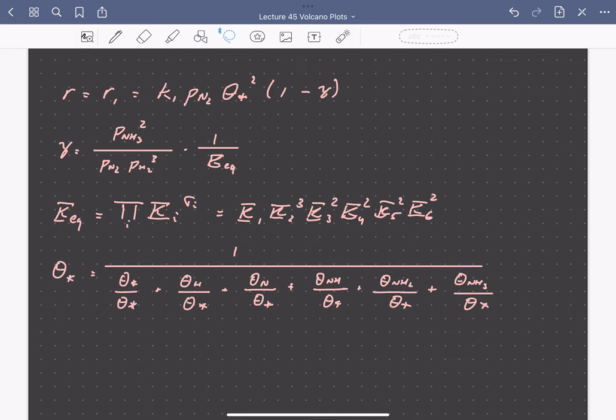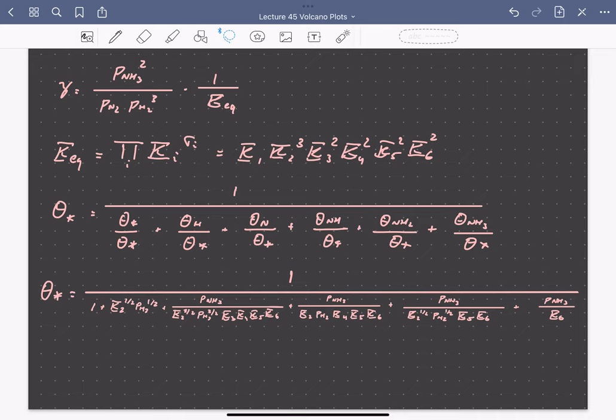The vacant site coverage in our rate equation we can find using a site balance, taking into account the coverage of all the different species on our catalyst surface: free sites, adsorbed hydrogen, adsorbed nitrogen, adsorbed NH, NH2, and adsorbed ammonia. We can write expressions for all these different coverages in terms of measurable quantities, and these depend on the respective equilibrium constants for all of these elementary steps, which we took to be quasi-equilibrated, so in this case everything except step one.